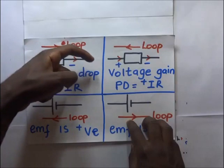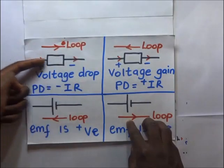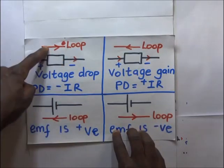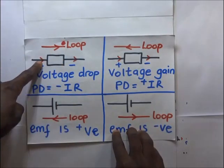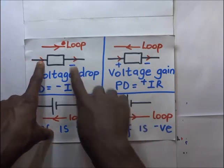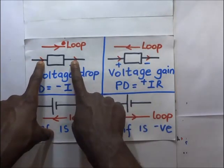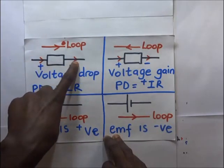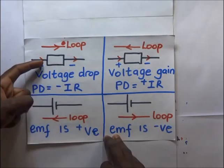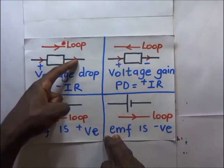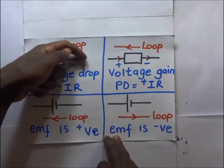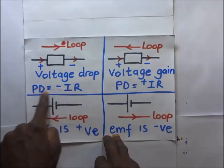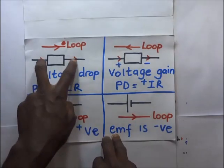If the loop is moving in the same direction as the direction of flow of current through a certain resistor, then current is moving in from one side and getting out the other. It is assumed that current moves from a position of higher potential towards a position of lower potential. So as the current goes through this resistor — as indicated by our loop — there will be a potential drop, and because of that drop, the PD across this resistor will be negative.